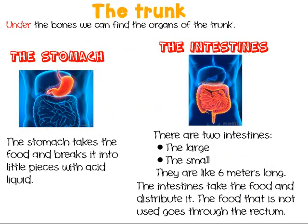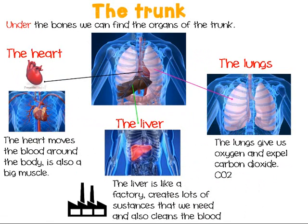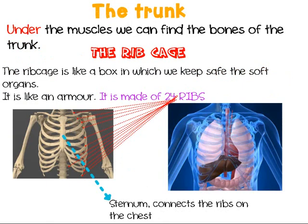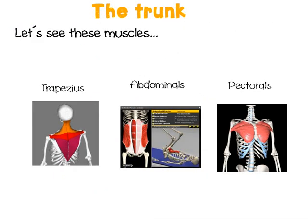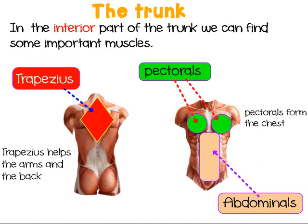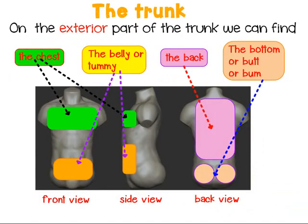So this is it for today! We've seen lots of organs: the bladder, the kidneys, the intestines, the stomach, the lungs, the liver, the heart. And the bones: the rib cage, the spinal column. And the big muscles: the pectorals, the trapezius, the abdominals. And the exterior parts of the trunk: the chest, the belly or tummy, the back, the bottom, the butt or bum — and also the waist. I'll see you soon, bye-bye!